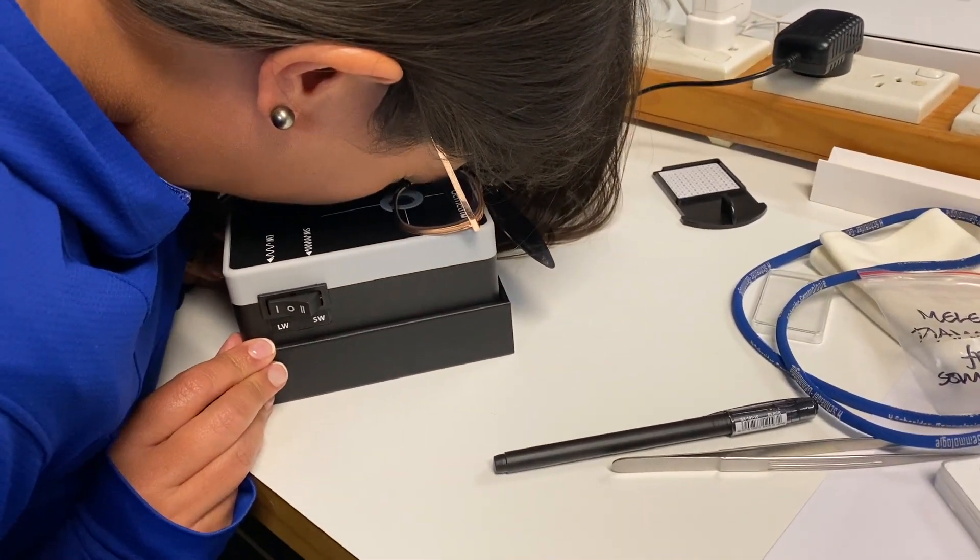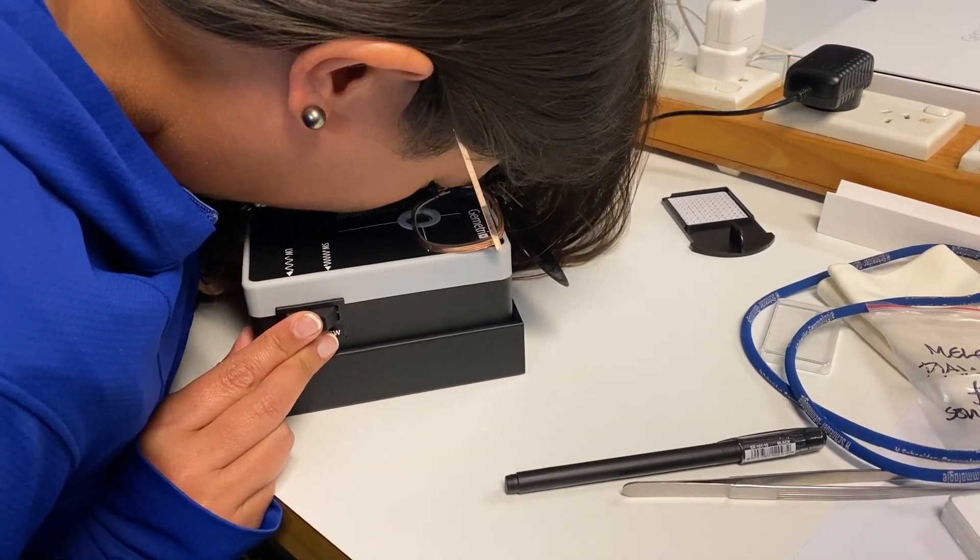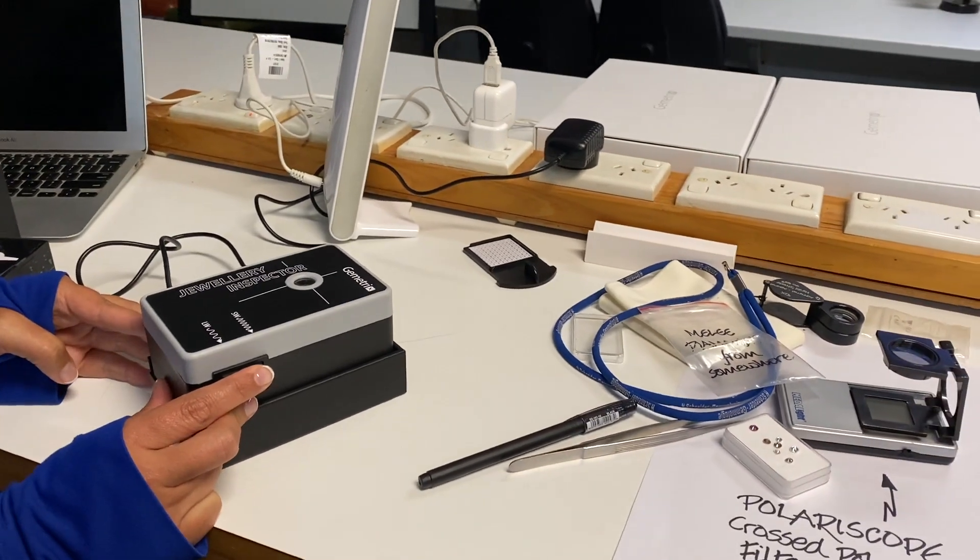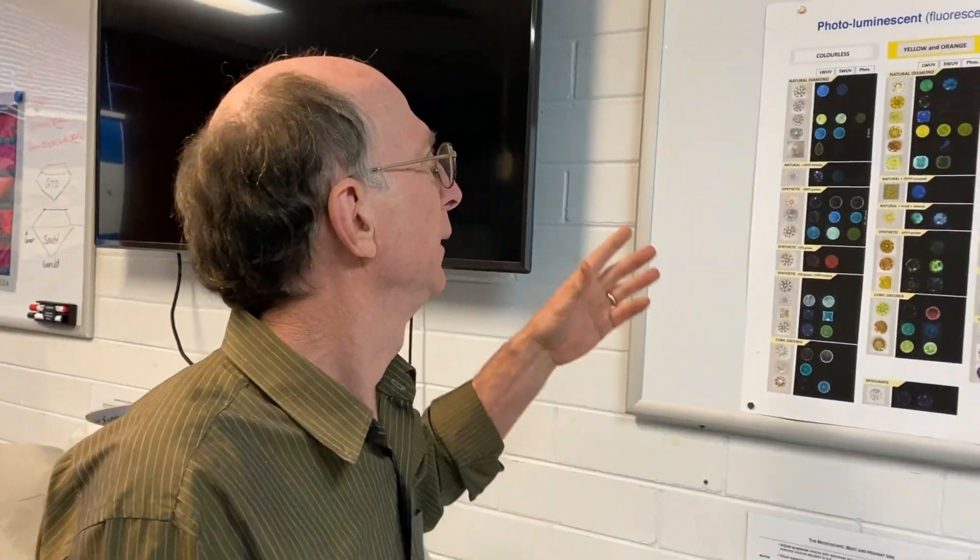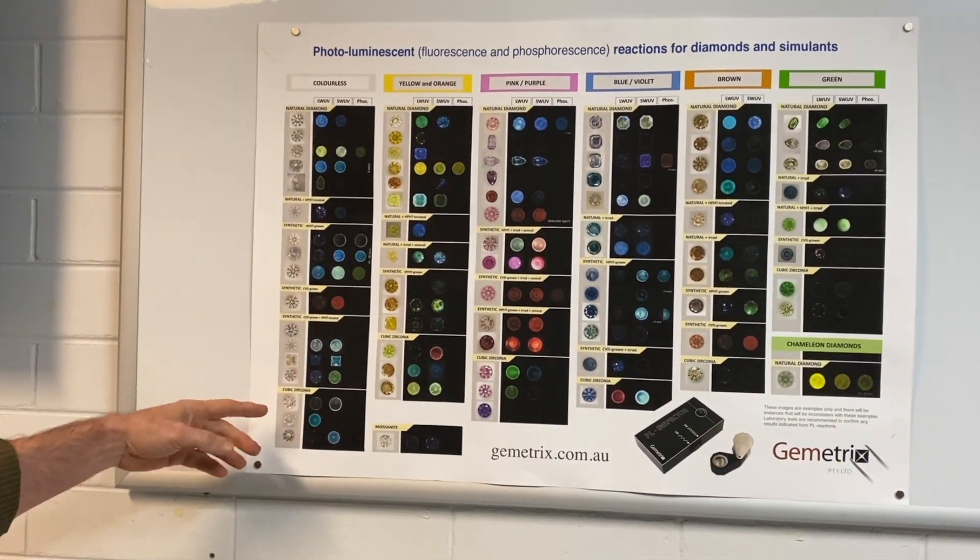OK, we place the diamonds into a viewing area here. So, do they always fluoresce blue? Most of the naturals will fluoresce blue, but they can come in a range of colors, depending on the inclusions in them, the defects, and also the color of the diamond.